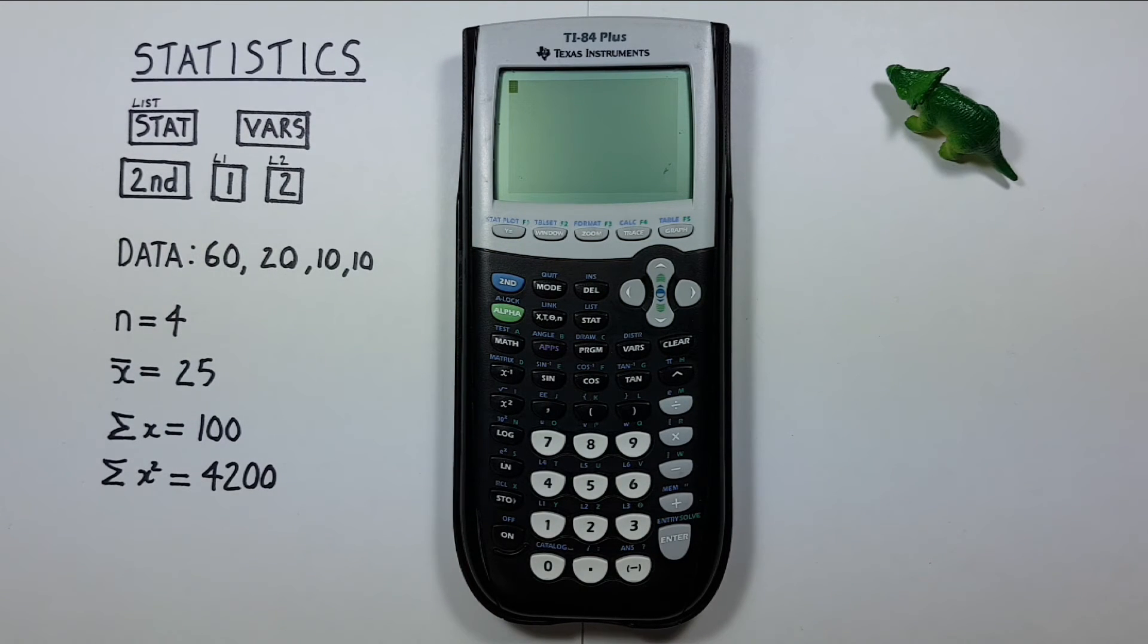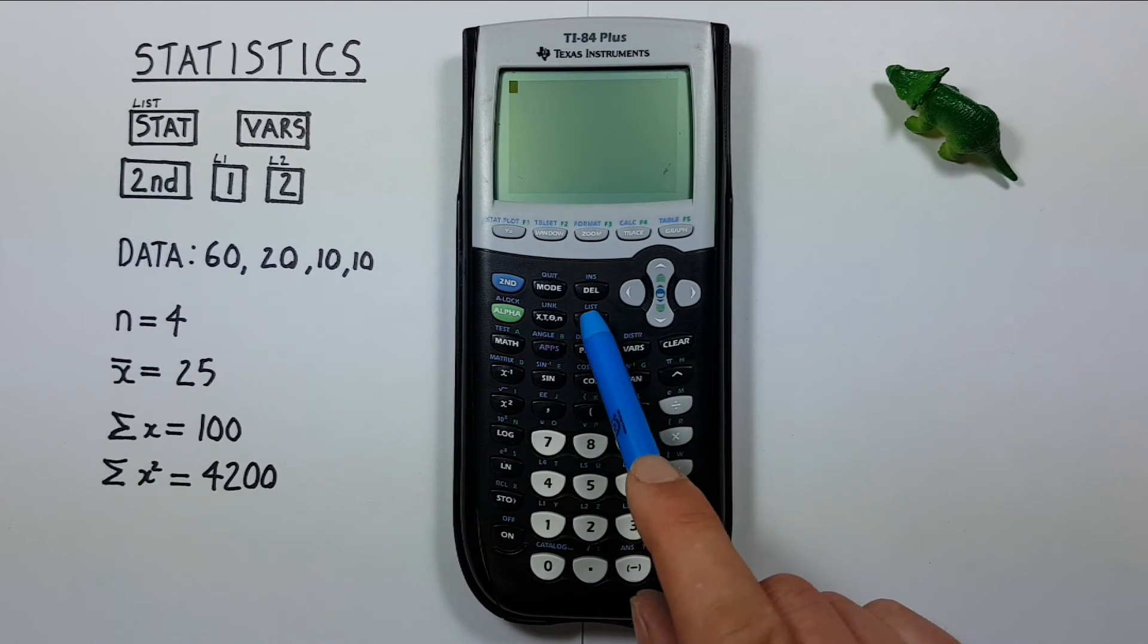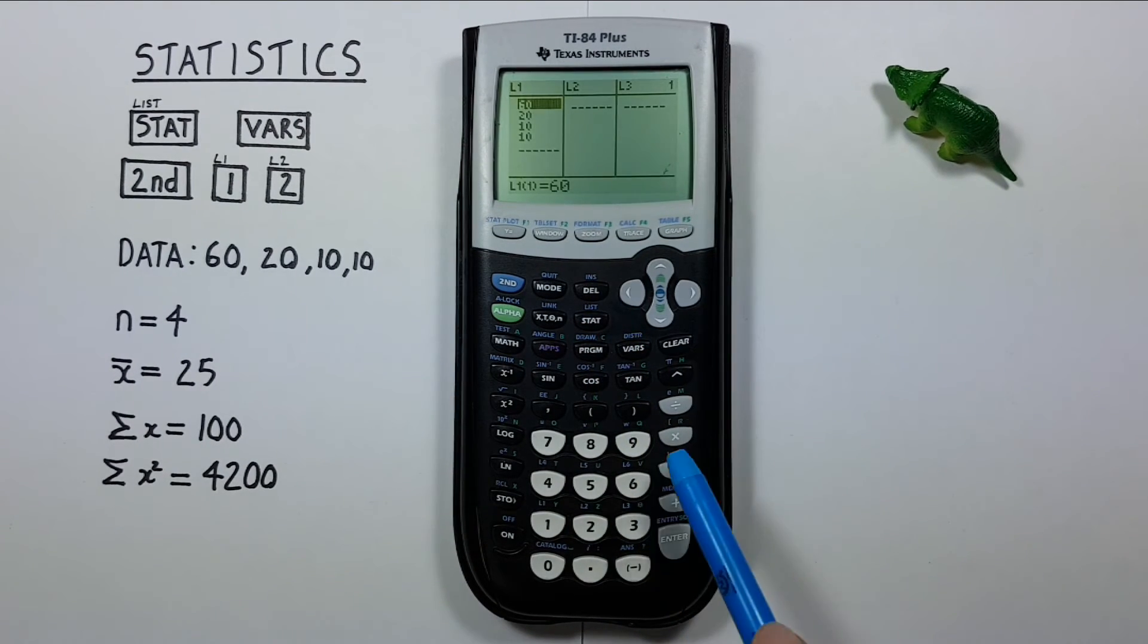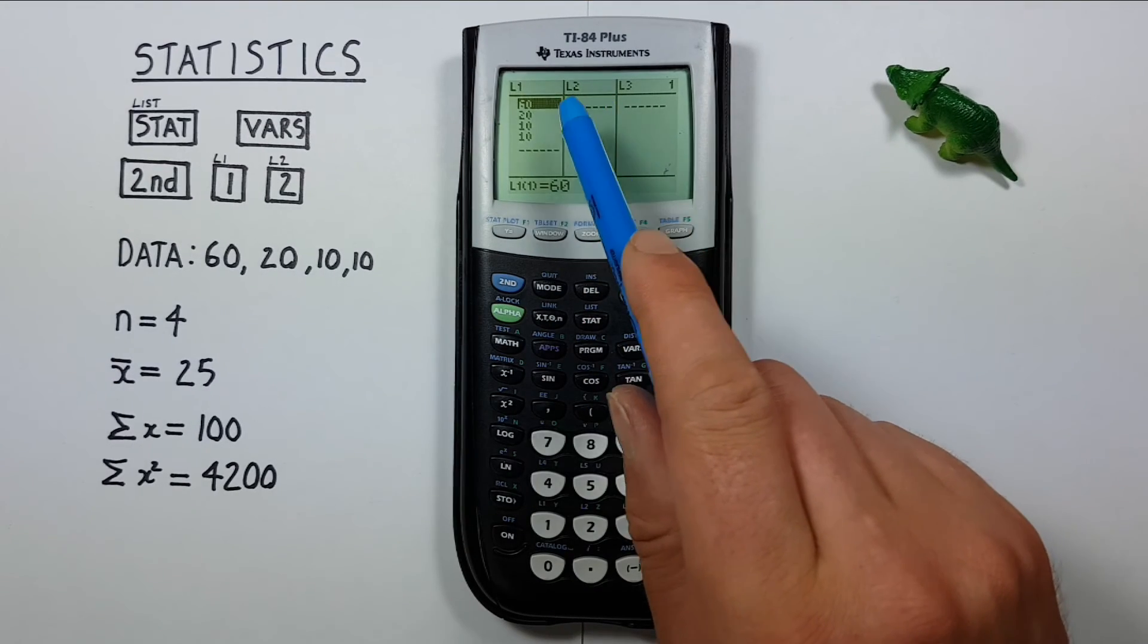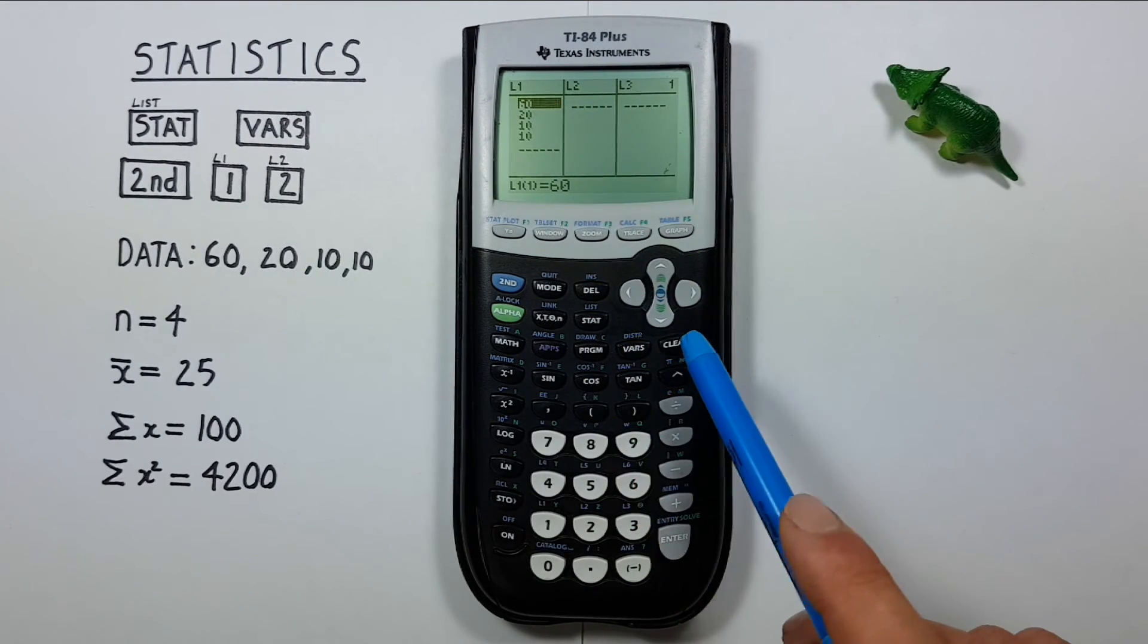All right. What happens if we have a data set with a lot of numbers that repeat multiple times, and we want to be able to enter that quicker? That's where we can use our list 2 to enter a frequency list. So if we go back into our data by pressing STAT and EDIT, we're back in our list menu.